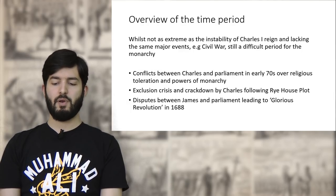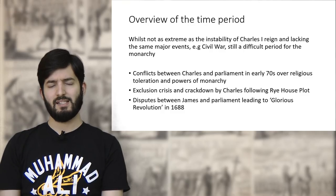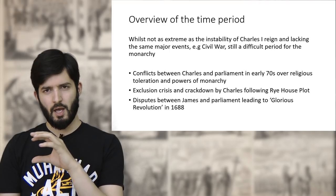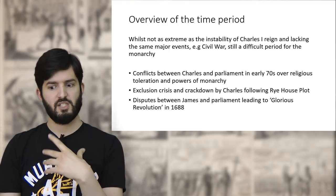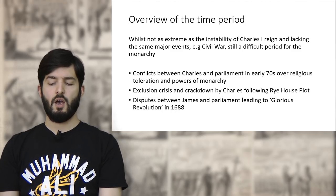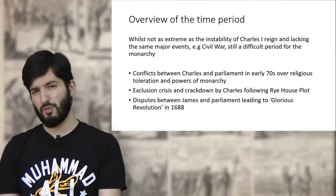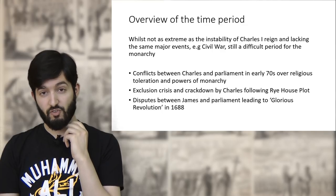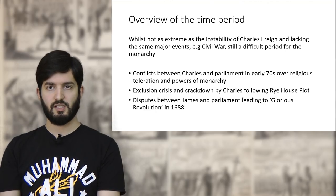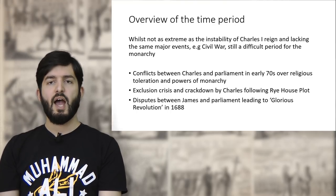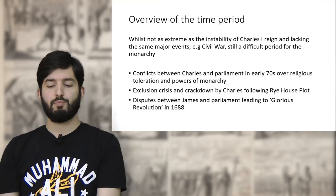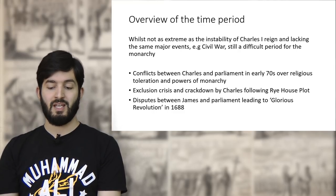Much like the first time period, whilst it's not as extreme as the instability of Charles I's reign, the Restoration period is still punctuated by constant instability. For example, there is the conflict between Charles and parliament from the late 1660s and early 1670s over religious toleration and the powers of the monarchy. Then there's the high point of the period — the Exclusion Crisis and the subsequent crackdown by Charles following the Rye House plot. And of course, the main event is when the Stuart monarchy eventually collapses again as a result of disputes between James and parliament, leading to the Glorious Revolution in 1688.